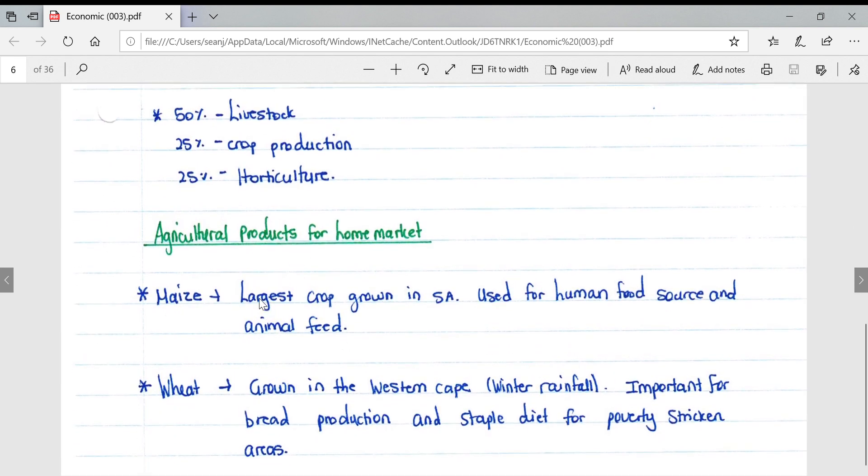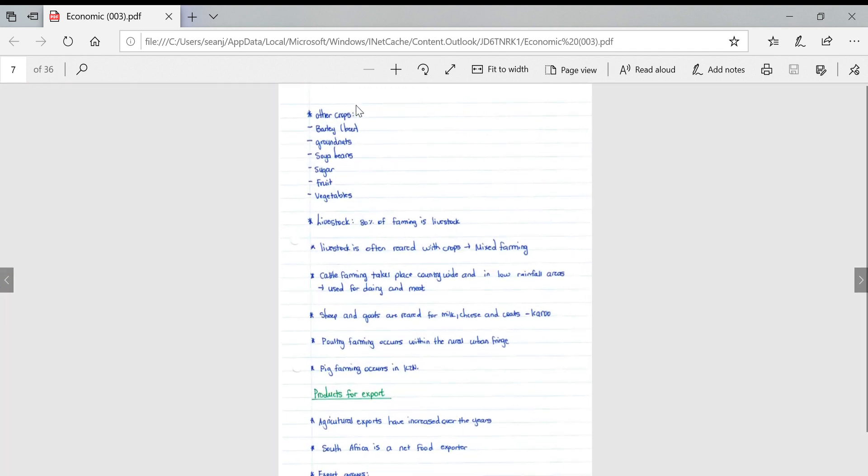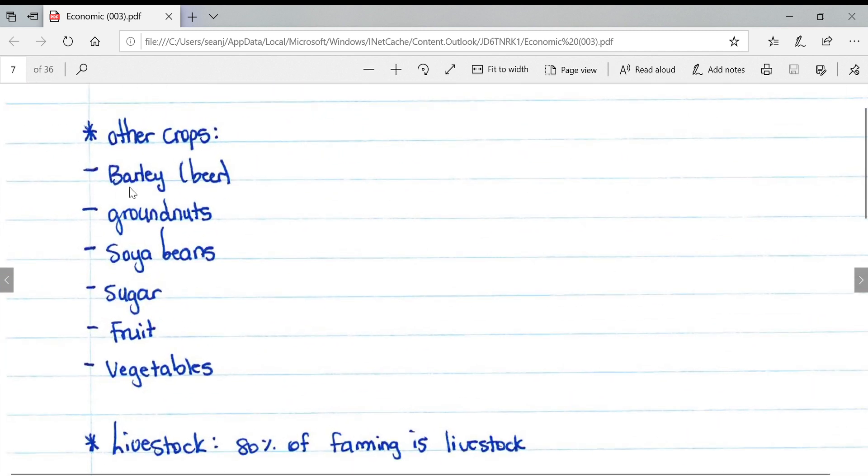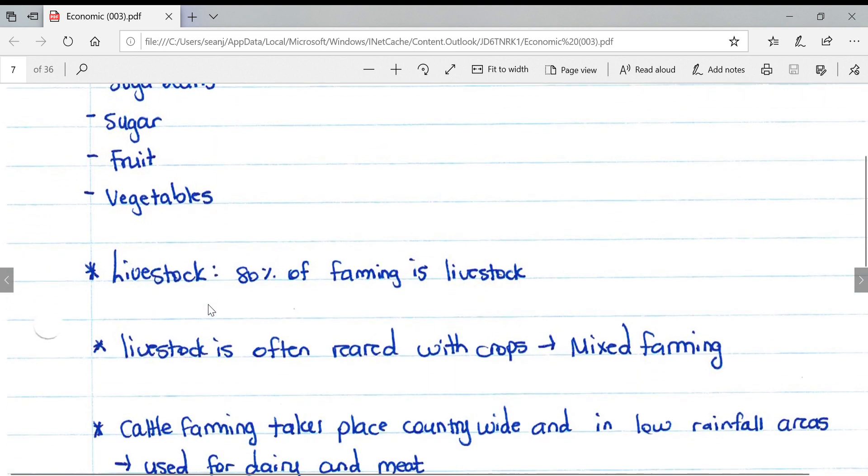For agricultural products for the home market, maize is the largest crop grown in South Africa, used for human food and animal feed. Wheat is grown in the western cape because of its winter rainfall and is important for bread production and staple diet for poverty-stricken areas. Other crops grown include barley used in beer, groundnuts, soya beans, sugar, fruit and vegetables.